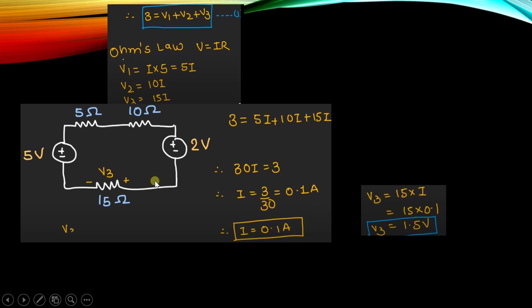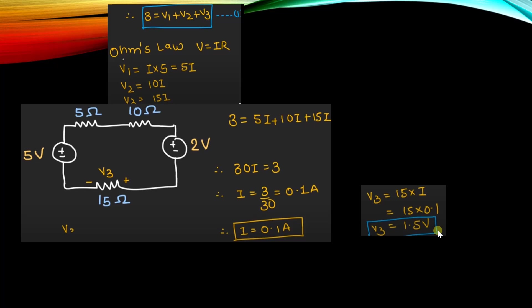We now find the voltage drop across the 15-ohm resistance. V3 equals 15 times I. Substituting I equals 0.1, the voltage drop across the 15-ohm resistance is V3 equals 1.5 volts. This is how we apply KVL for solving numerical problems.